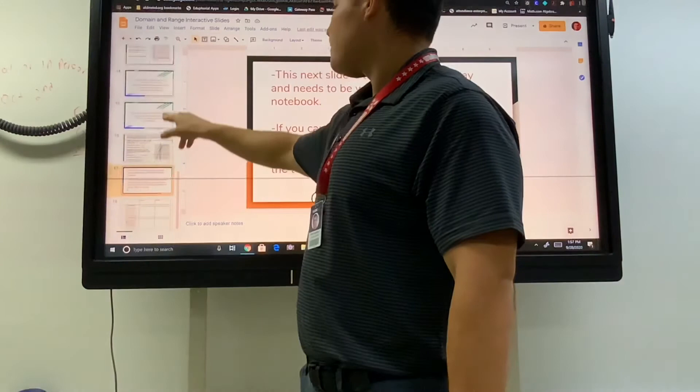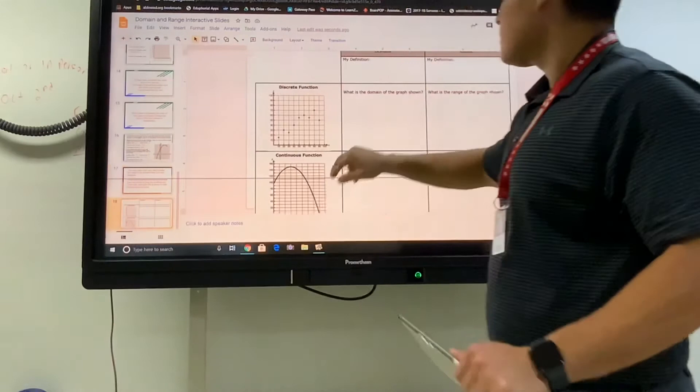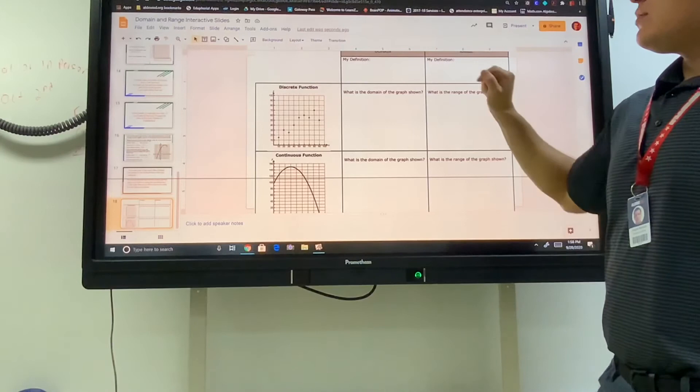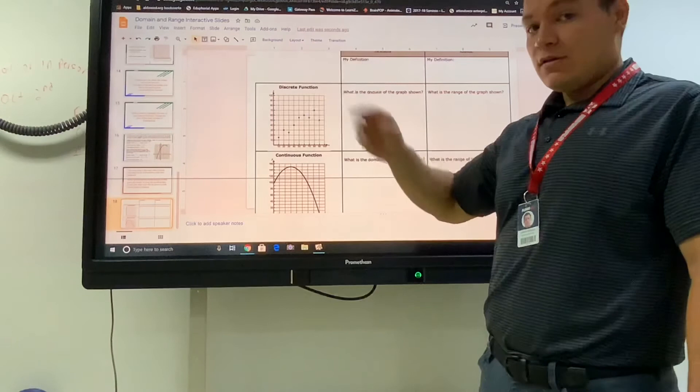We're almost done. This next slide is the main idea for today's lesson. All we did was we identified the different types of graphs. You had discrete and continuous, and we labeled the domains and the ranges of each of these graphs, each type. So I need you to fill this in on your own in your notebook, using your own ideas based off of today's lesson. Turn it into me.